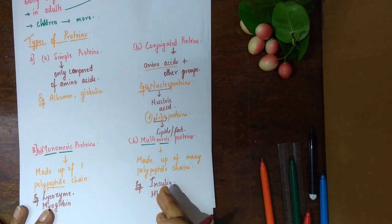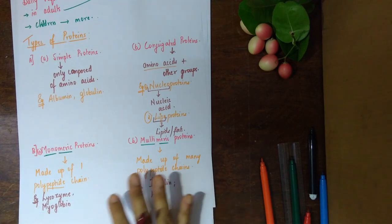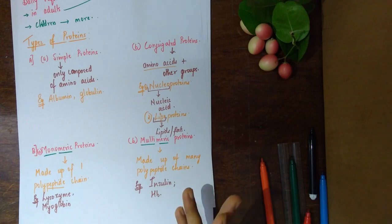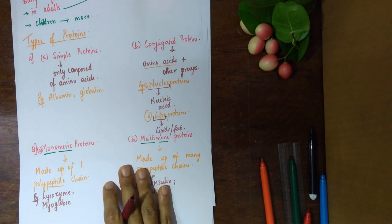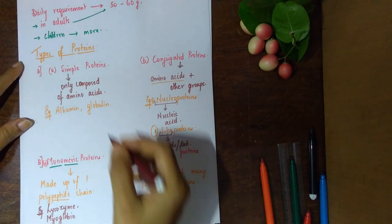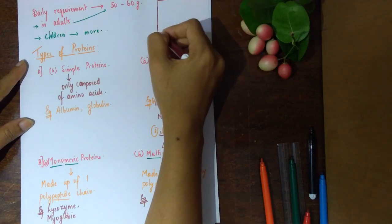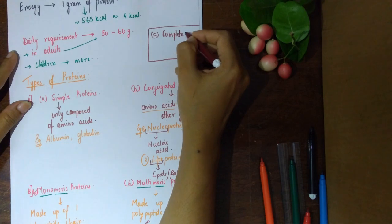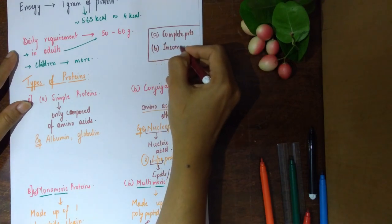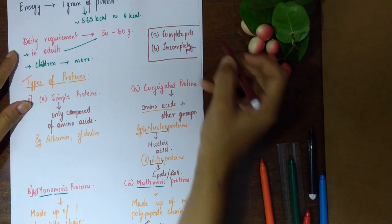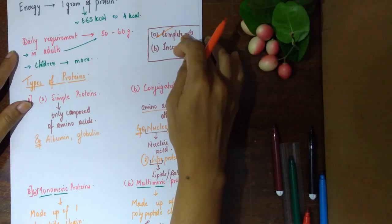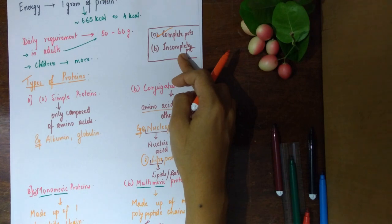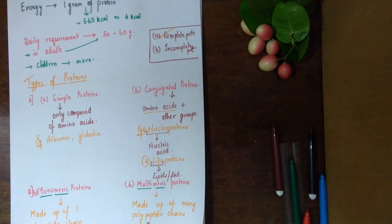We also have first class proteins and second class proteins. First class proteins have all the amino acids, and second class proteins have an incomplete amount of amino acids. Complete proteins are generally derived from animal sources, where you get all 20 amino acids. Incomplete proteins are generally from plant sources, which fall short of those 20 amino acids.